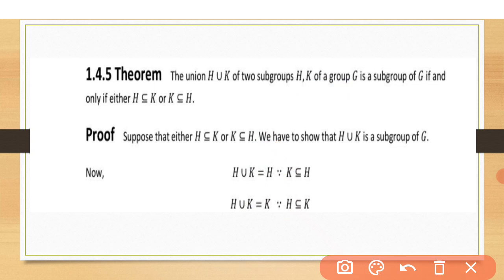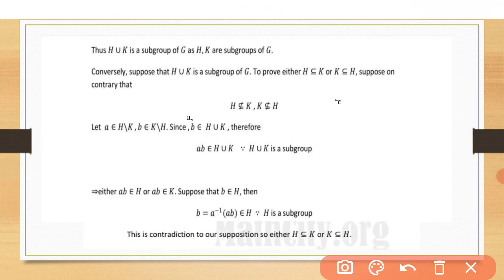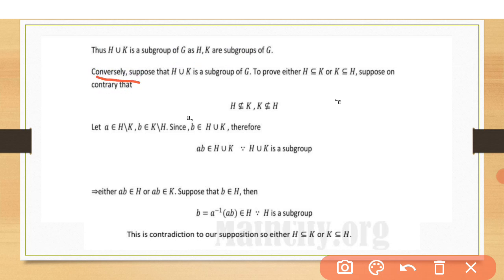Hence, the first direction is proved. Conversely, suppose that H∪K is a subgroup of G, where H and K are subgroups of G. We will now prove that H is contained in K or K is contained in H.